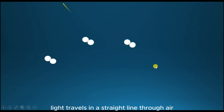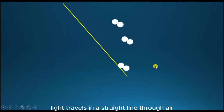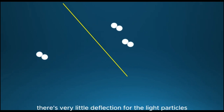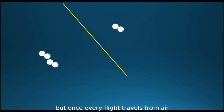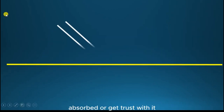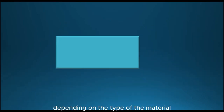Light travels in a straight line through air, because the air molecules are not close together, so there's very little deflection for the light particles. But once a ray of light travels from air into some other material, it can either get reflected, absorbed, or get transmitted, depending on the type of the material.